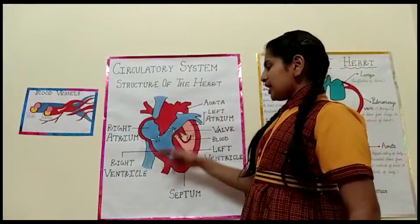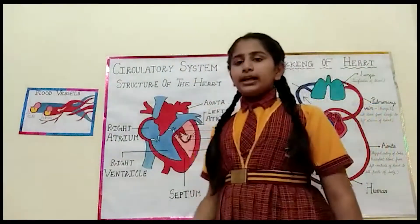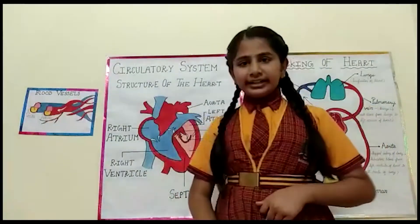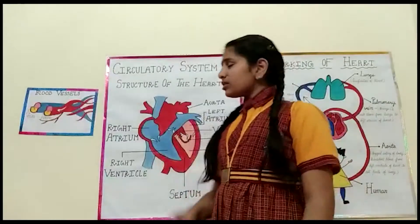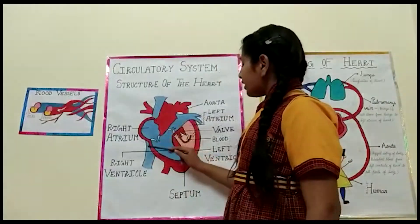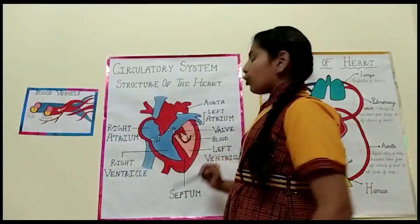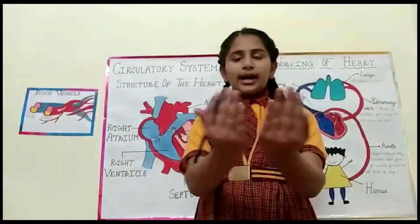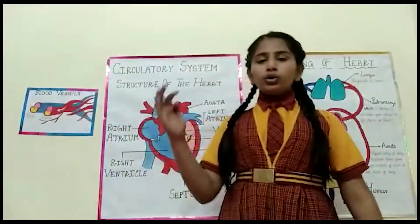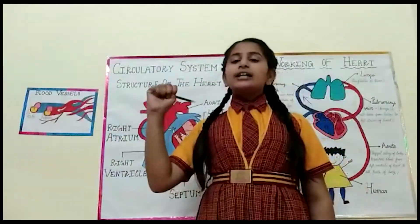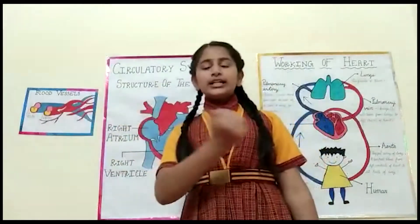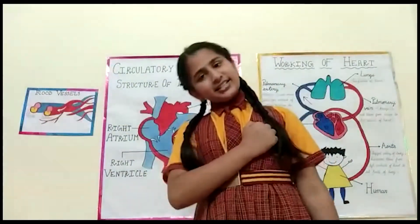So let's move on to the main part of the circulatory system — the heart. The double-layered membrane of the heart is called the pericardium, and the muscles present in the heart are called cardiac muscles. The heart is enclosed by the rib cage for protection. It is the size of our fist and is situated on the left side in our chest cavity.